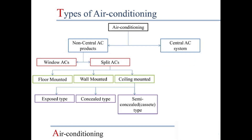Split AC systems are further divided into three types: floor mounted, wall mounted, and ceiling mounted. Ceiling mounted is further divided into exposed type, concealed type, and semi-concealed or cassette type.